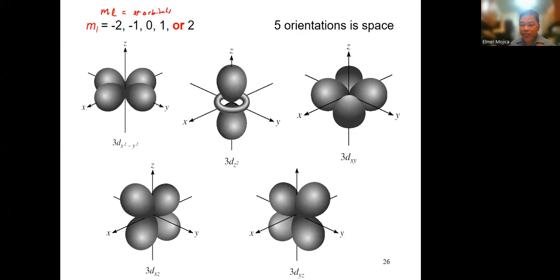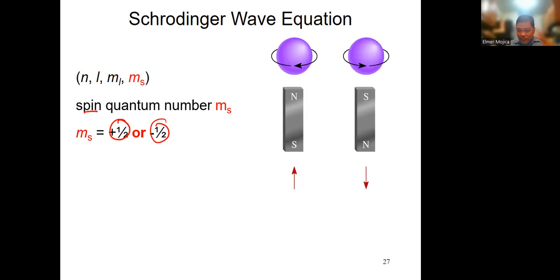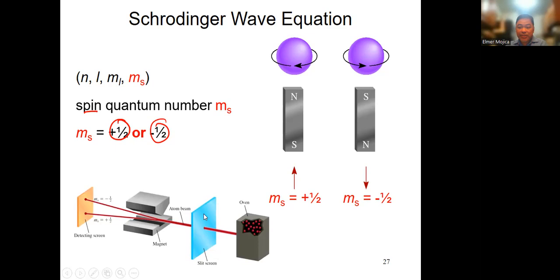The last quantum number is the spin quantum number, which can only have two values: positive one-half or negative one-half. This comes from experiments using magnets, which showed that electrons in a given orbital have two opposite spins — one clockwise (positive one-half) and one counterclockwise (negative one-half).